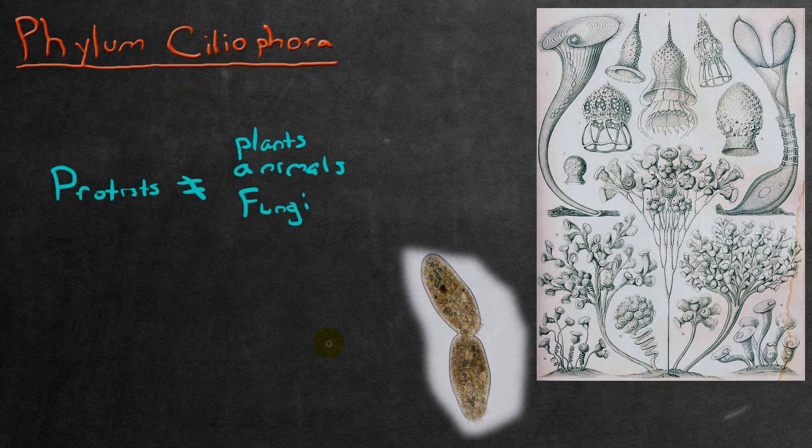Protists are basically eukaryotic organisms that are not plants, animals, or fungi. Some unicellular protists can exist in both salt or brackish and freshwater.